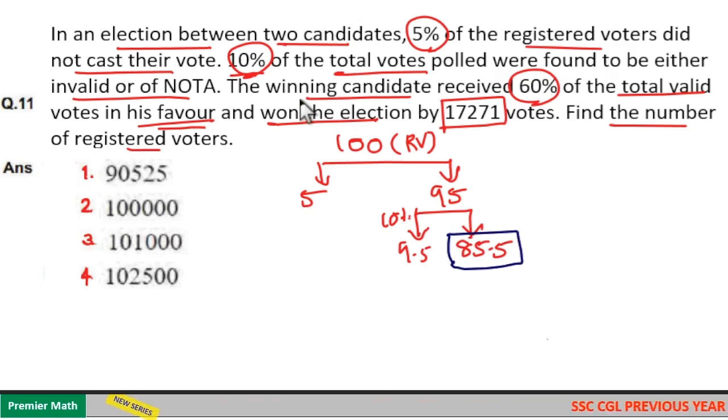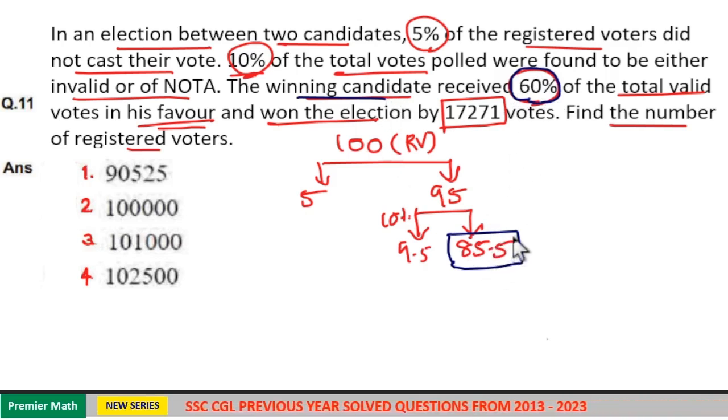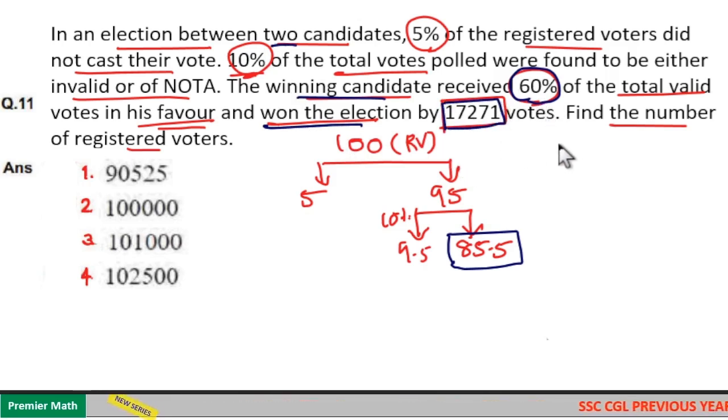Now here winning candidate received 60% of the total valid votes. That is 60% of 85.5 winning candidate received. And winning candidate received 60% means remaining 40% his opponent received. And he won the election by 17,271 means 60 minus 40.